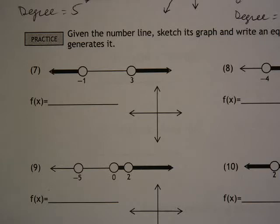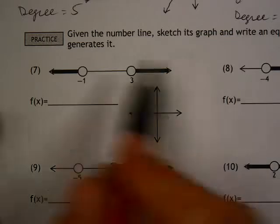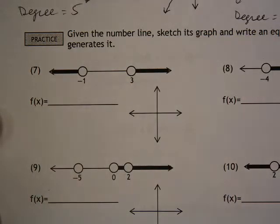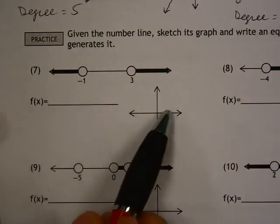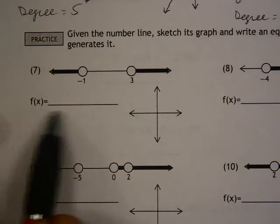Number 7 on worksheet 20.4 for Algebra 2. We're given the number line, so we kind of have to go backwards. We're going backwards to find not only the graph, but also the equation.